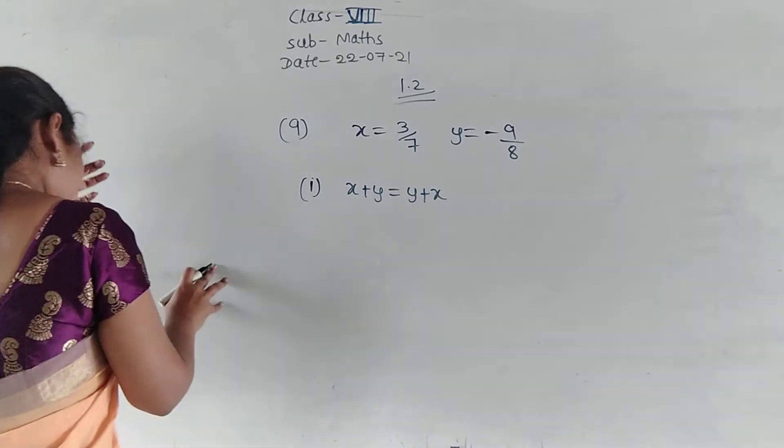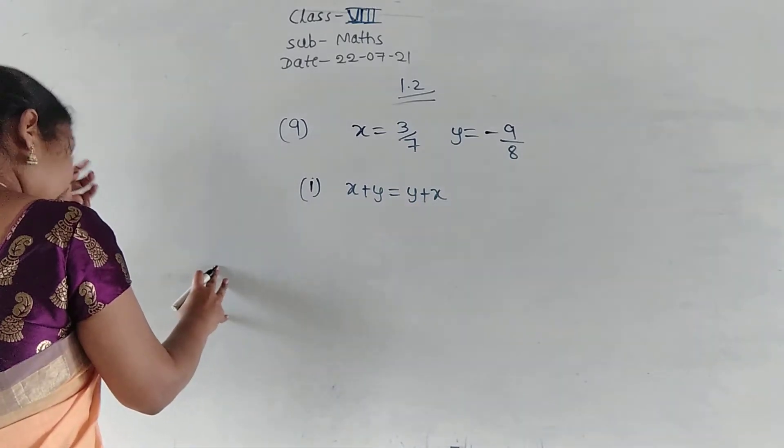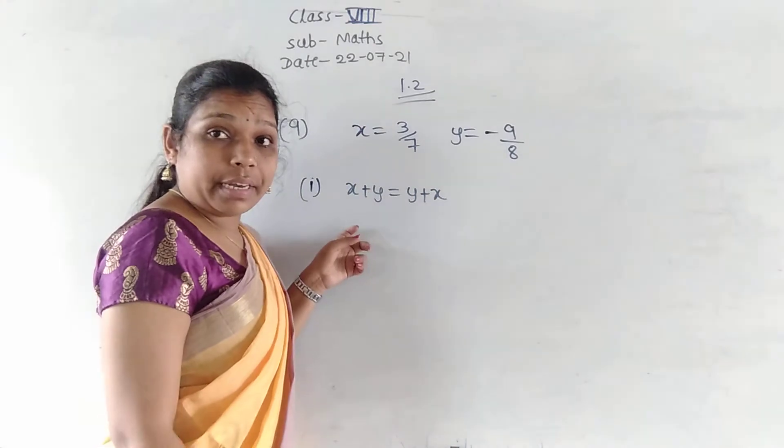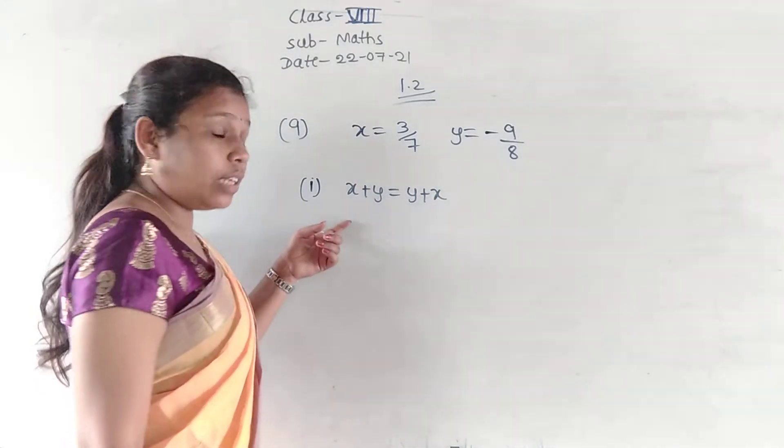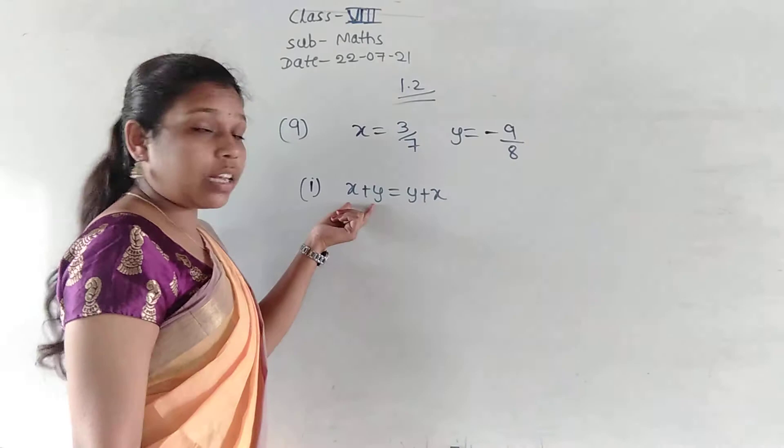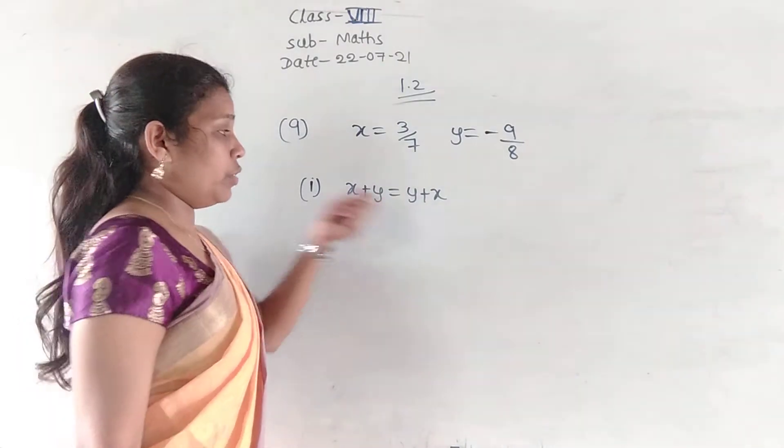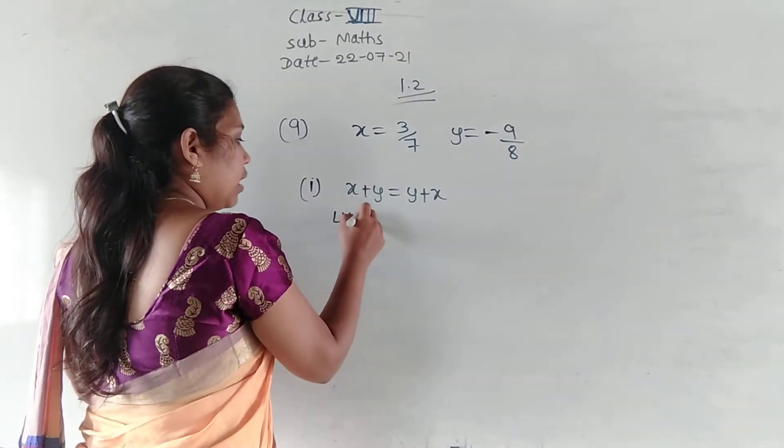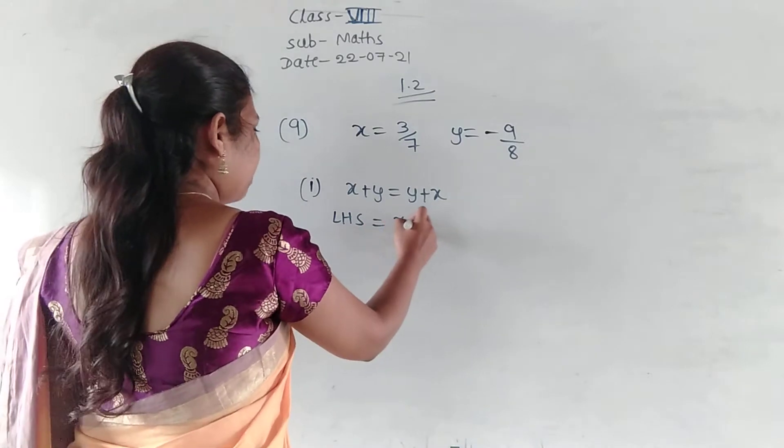Which property is x plus y is equal to y plus x? It is nothing but commutative property. So, now we have to check the commutative property. Before that first consider the LHS. This will be the RHS.